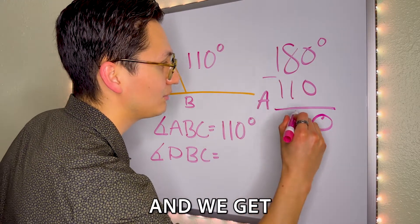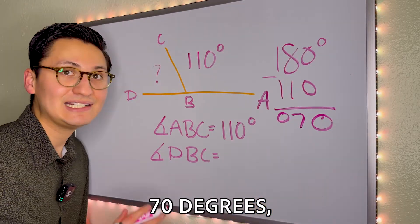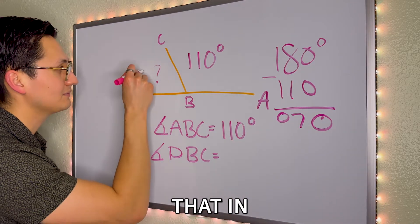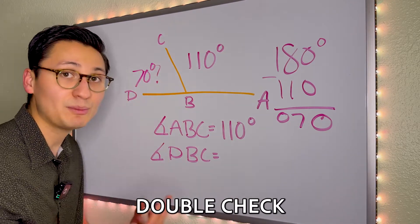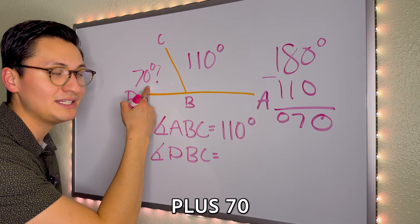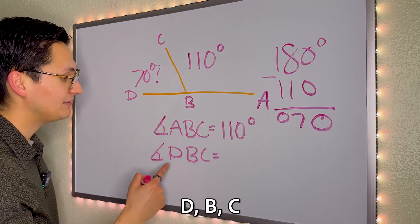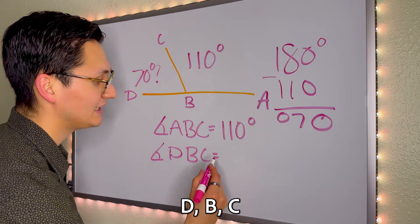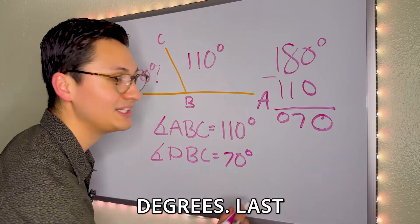We subtract and we get 70 degrees. We plug that in and to double check, we can add. So 110 plus 70 is 180. So the angle of D, B, C is 70 degrees.